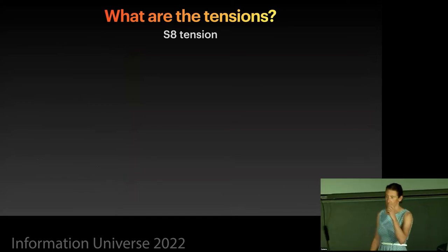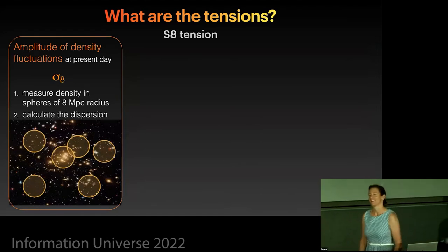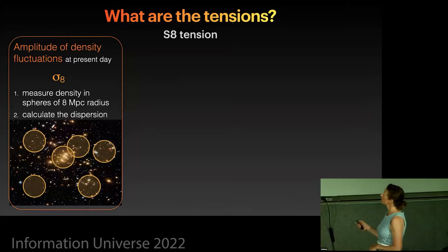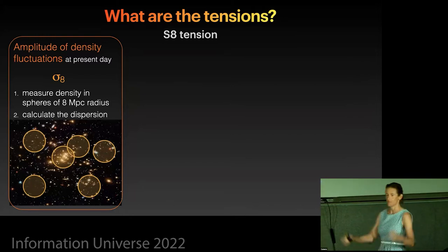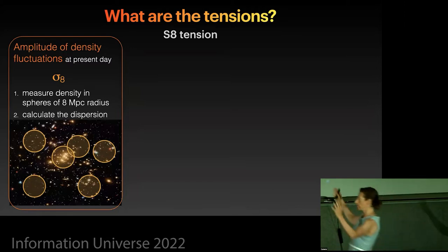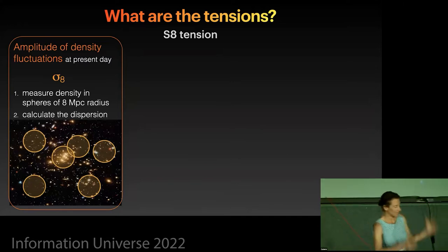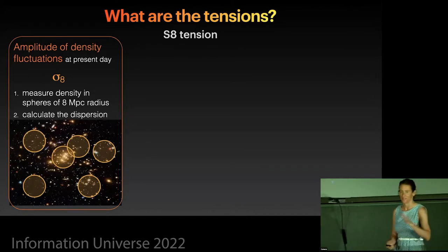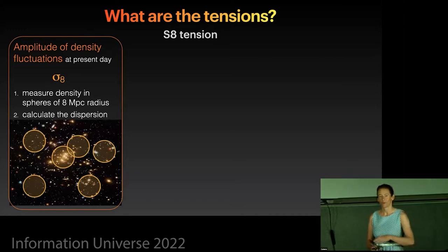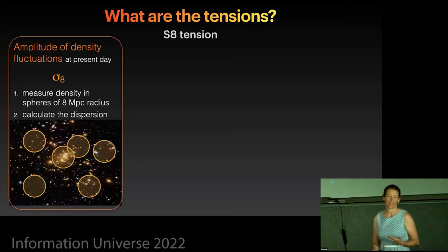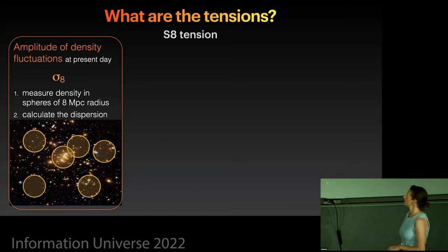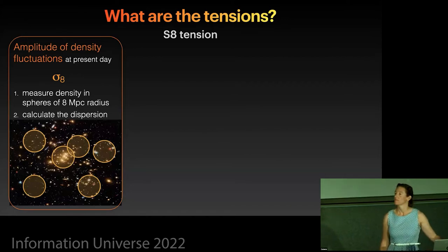The other one that's come up is the S8 tension. And I'll explain a little bit what that is. So when we're measuring things about the universe, one of the things that we measure is how clustered it is. And we use the term sigma-8 to do that. Now, what is sigma-8? Basically, it's if you take a sphere of eight megaparsecs, you plonk it down in the universe over here and you measure the density. Then you plonk that same sphere over here and you measure the density over here. You repeat that many, many times. The dispersion in that measurement is sigma-8.